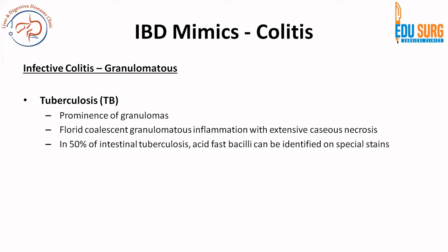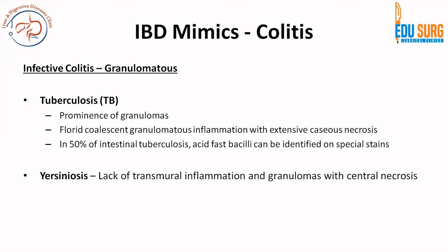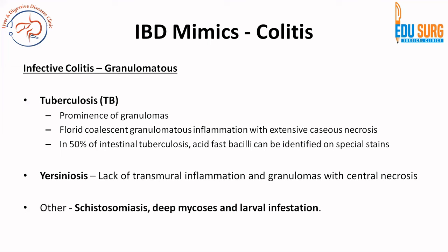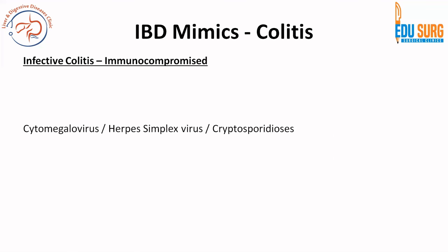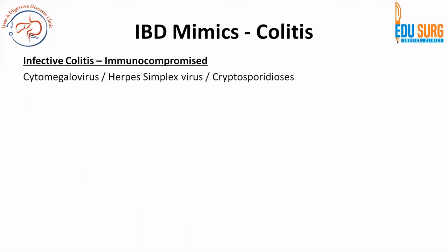Coming to granulomatous infective colitis, the most common cause is tuberculosis, which has florid coalescent granulomatous inflammation with extensive caseous necrosis, and acid-fast bacilli can be identified in 50% of cases. Yersiniosis has granulomas with central necrosis but no transmural inflammation. Other diseases with granulomas include schistosomiasis, deep mycosis, and larval infestation. In immunocompromised patients, the common causes are cytomegalovirus, herpes simplex virus, and cryptosporidiosis, which should always be kept in mind.